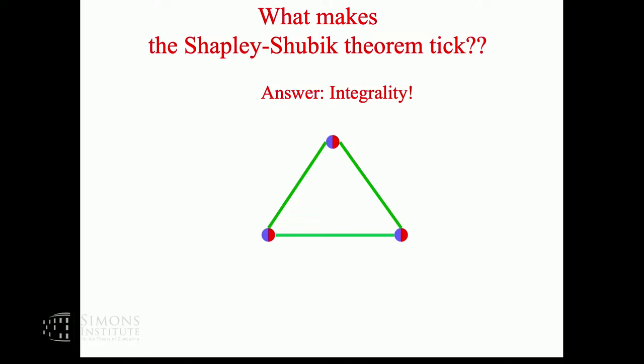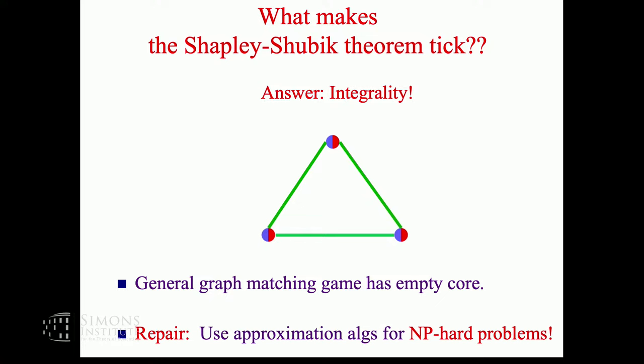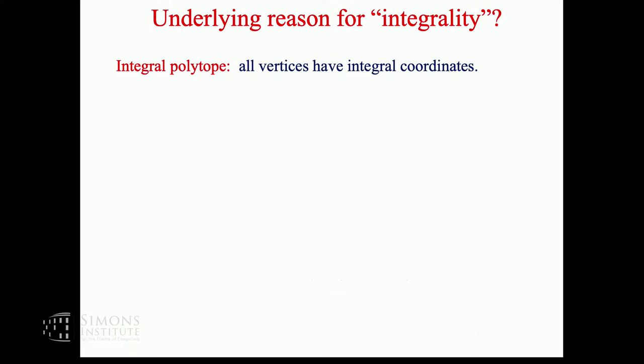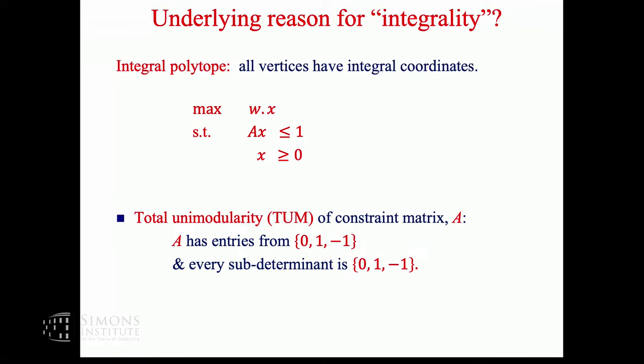As soon as we go to non-bipartite graph, unit weight edges over a triangle, then the optimal fractional matching is half, half, half which is 1.5. Optimal integral matching is strictly smaller. The core of this game is empty. One way to repair it using notions from approximation algorithms for NP-hard problems is to come up with a two-thirds approximate core imputation. Why did I say NP-hard problems in red? Okay, because there's nothing NP-hard here.